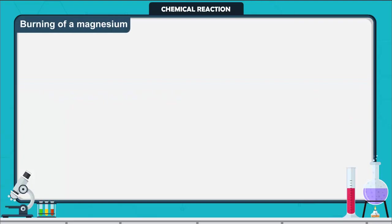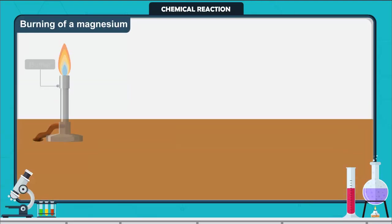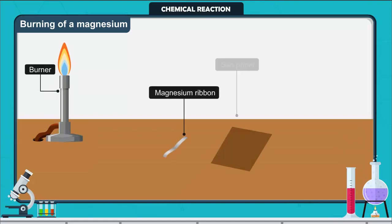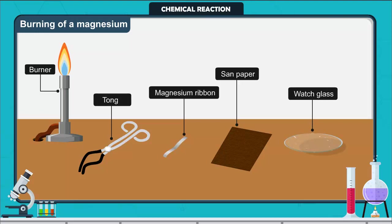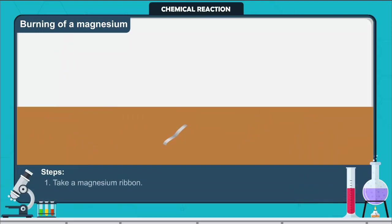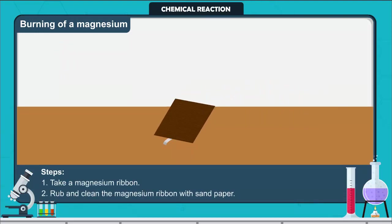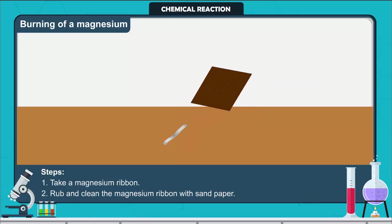Burning of a magnesium ribbon in air. For this experiment we need a burner, a small part of magnesium ribbon, sand paper, a tong, and a watch glass. Take a magnesium ribbon and rub and clean it with sand paper. This is done to remove the protective layer of basic magnesium carbonate from the surface of the magnesium ribbon.